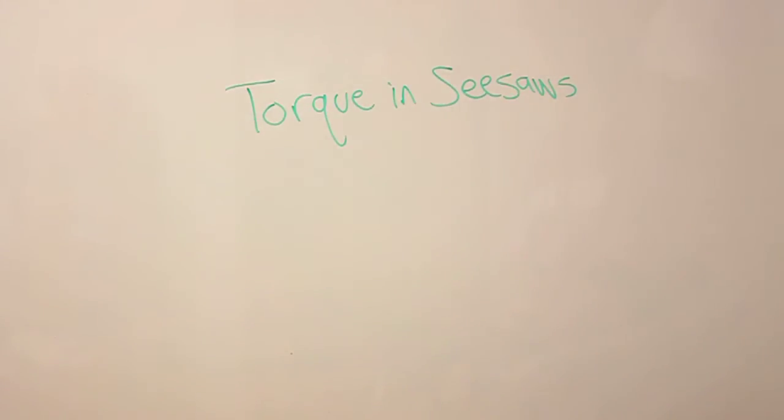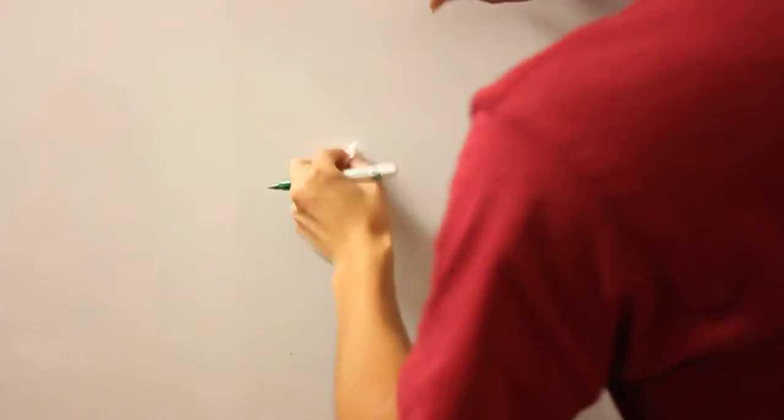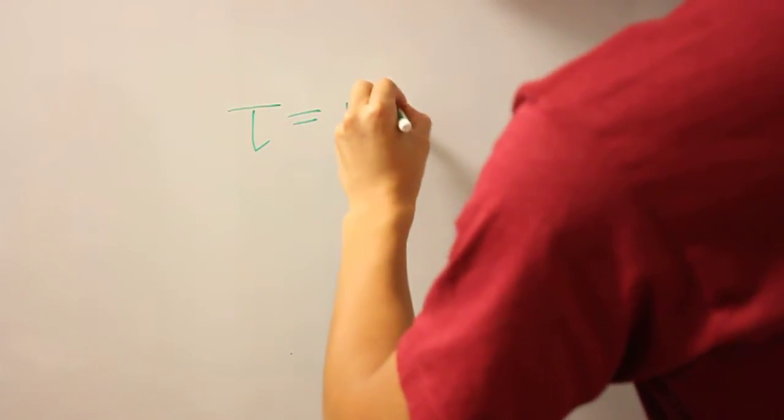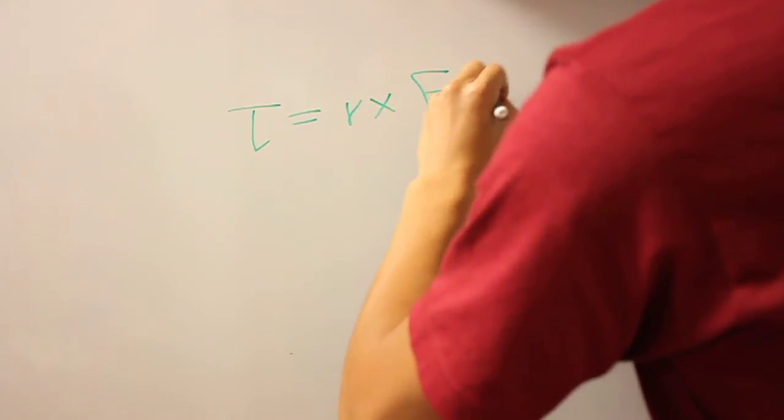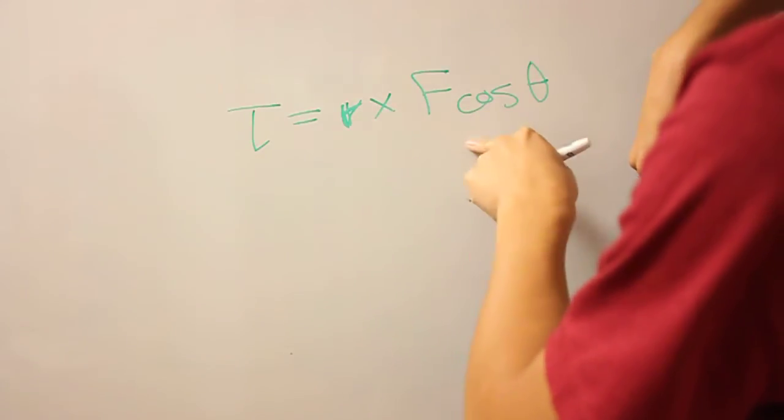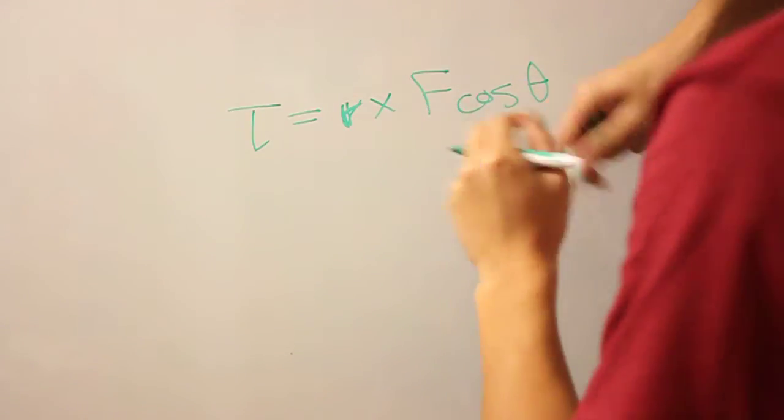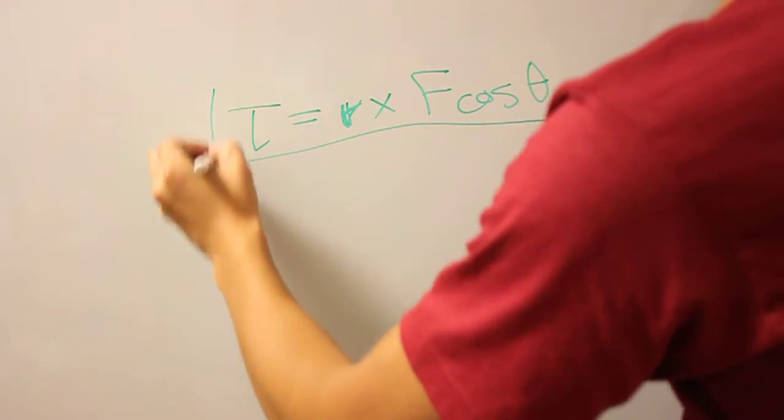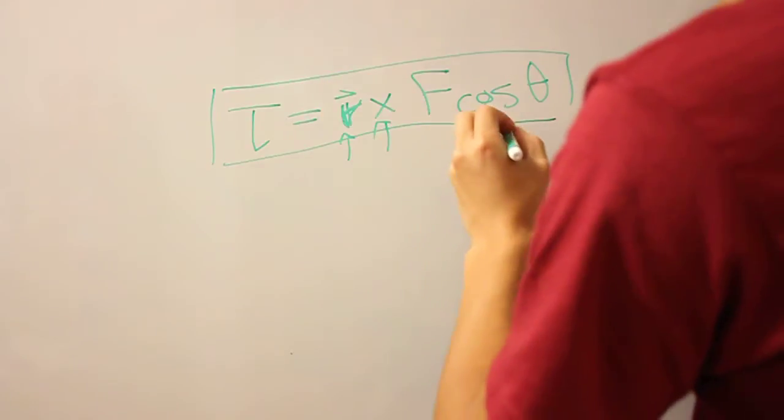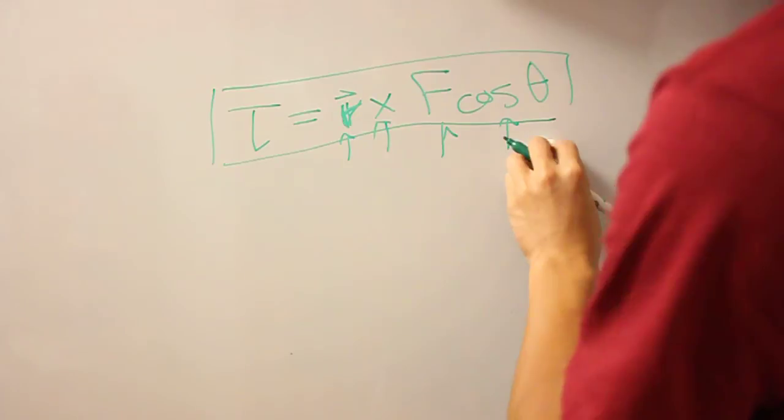The simplest way to understand torque is with seesaw problems, and you'll see why, because torque is defined as the position vector, the cross product of the force times cosine theta. Now this is complicated if you do not understand what these mean, but in most cases you can understand it preconceptually without even the formula.